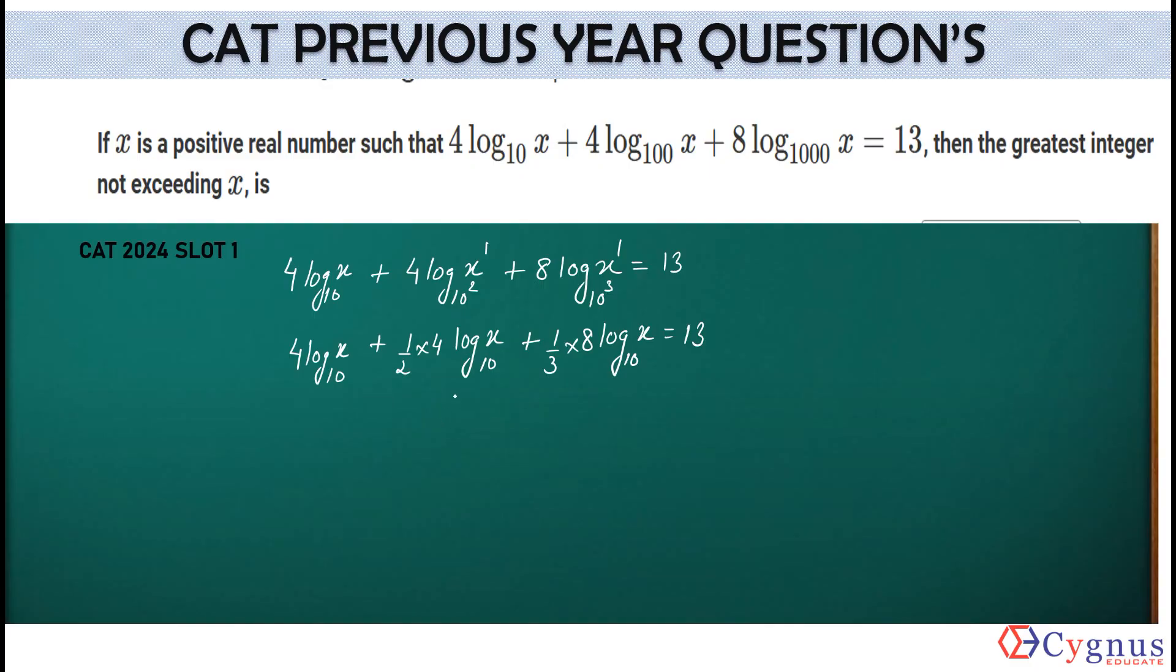Now, look at all the three logs. Their bases have become same. So, I can apply that property log m plus log n plus log p. 4 goes here. What do you get? Log of x to the power 4 to the base 10. Next one will become log of x. This 4 into half becomes 2. So, actually this becomes x squared to the base 10. This 8 by 3 goes to the power of x. You get log of x to the power 8 by 3 to the base 10. This is equal to 13.